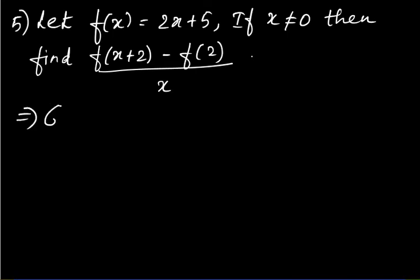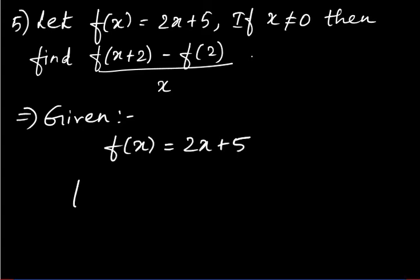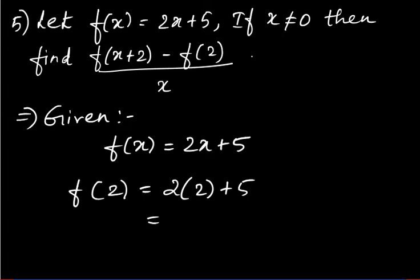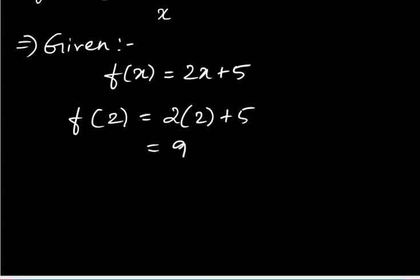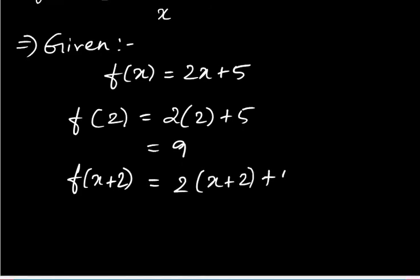Given f(x) = 2x + 5, first find f(2): replace x with 2, so 2×2 + 5 = 4 + 5 = 9. Then find f(x+2): replace x with (x+2), so 2(x+2) + 5.